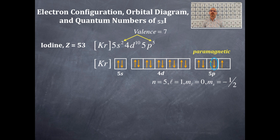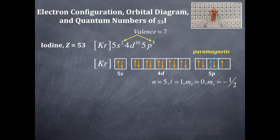Hopefully you get that for iodine. Make sure you can combine the largest principal quantum number to get the valence electrons — that's critical. Make sure you understand paramagnetism and diamagnetism; it's really simple when you have an orbital box diagram. Do the electron configuration first, then the orbital box diagram second, until you become familiar enough to get the orbital box diagram directly from the periodic table. If you do it this way, you shouldn't run into any problems.